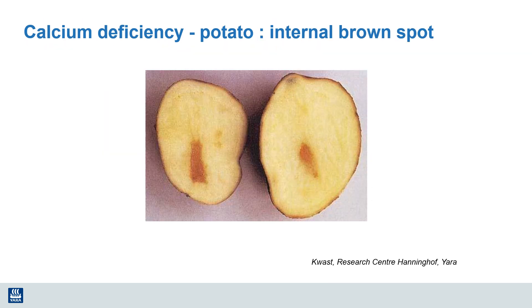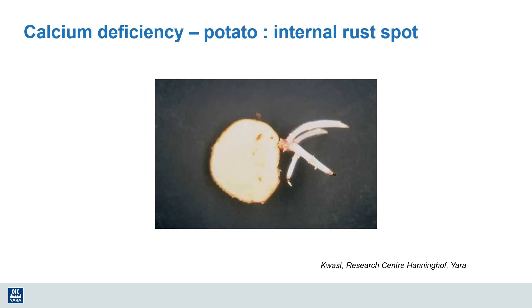Potatoes are another crop where getting enough calcium into the tuber is a concern. Where there's a lack of calcium, potatoes often develop an internal problem called brown spot, where cell walls and membranes aren't forming properly. This produces a potato that's unappealing to eat, and during storage that brown spot continues to increase in size and the potatoes begin to rot. Another malady of potatoes is internal rust spot — again, black or brown tissue that develops inside the potato and continues to grow during storage.